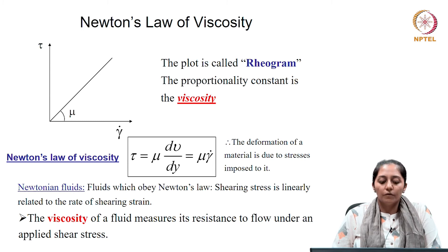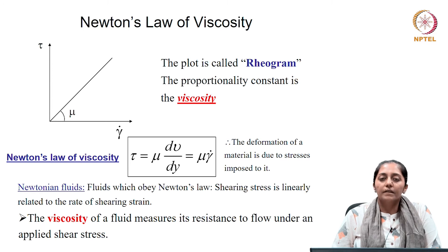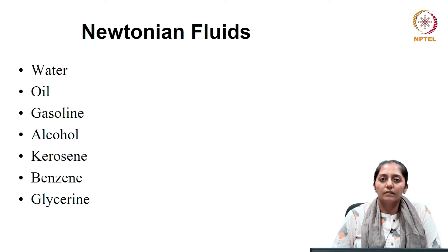Newtonian fluids follow Newton's law and shear stress is linearly related to the rate of shear strain. Viscosity of a fluid measures its resistance to flow under the applied shear stress. Some examples of Newtonian fluids are water, oil, gasoline, alcohol, kerosene, benzene, and glycerine.